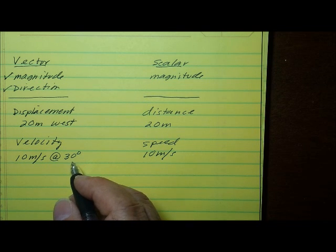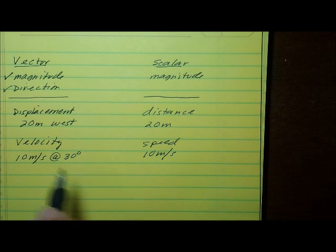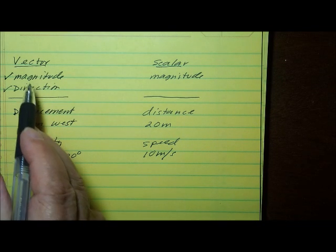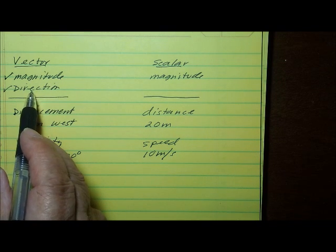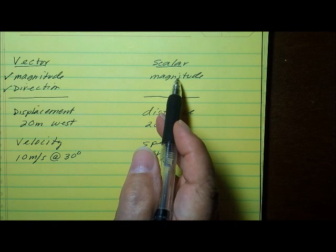So here's what you have to remember. A vector measurement has both a magnitude and a direction. A scalar measurement only has a magnitude.